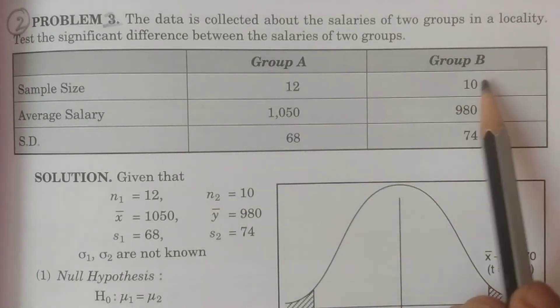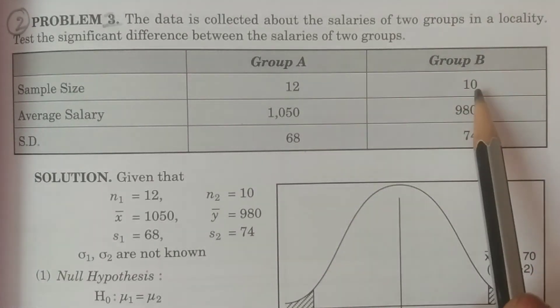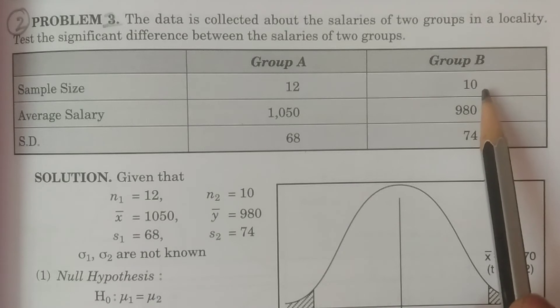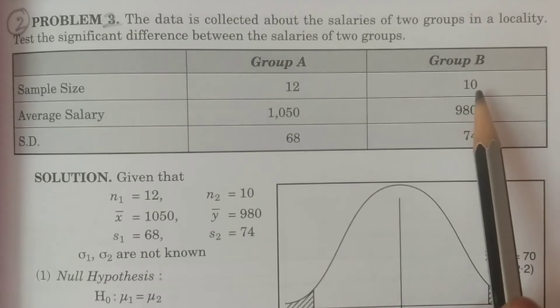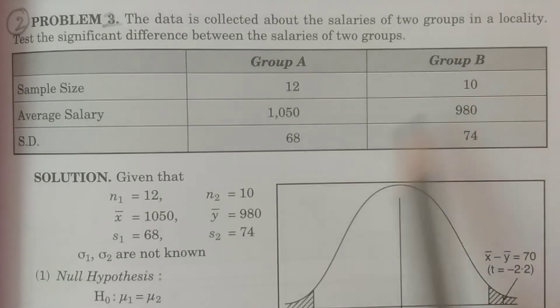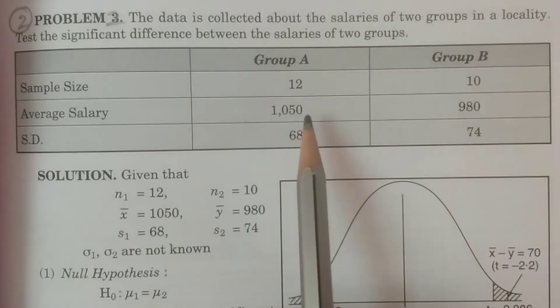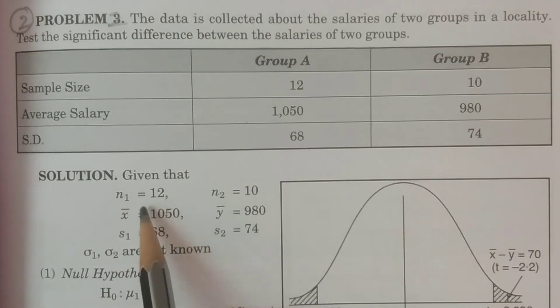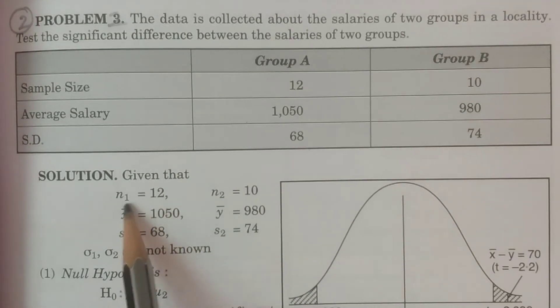Remember, only the sample sizes n1 and n2 matter. If n1 and n2 are less than or equal to 30, it is a small sample. Therefore here it is less than or equal to 30, and therefore it is a small sample.